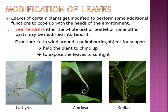Under modification of leaves, leaves in certain plants get modified to perform some additional functions to cope with the needs of the environment. In the environment there are different challenges for plants. To cope with those environmental needs or problematic situations, the leaves modify themselves to easily adapt to the surroundings.